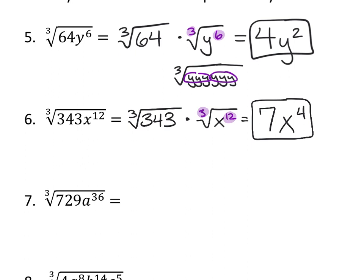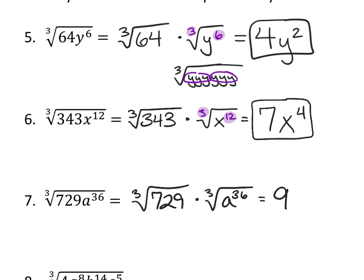Number seven is the same as five and six — try it on your own. The cube root of seven hundred twenty-nine in your calculator is nine. And when you divide thirty-six by three — the number inside by the index — you get twelve with no remainder. So the final answer is nine a to the twelfth. These are the level-one questions of this section because all the numbers ended up being pretty.